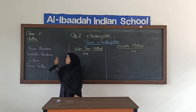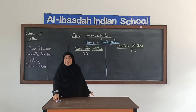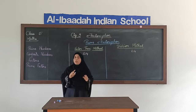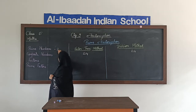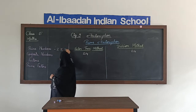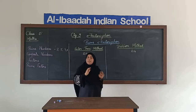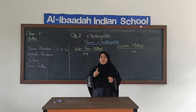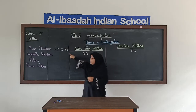First, prime numbers — what do we mean by prime numbers? The numbers that are divisible only by 1 and itself are called prime numbers. For example, numbers like 2, 5, 7, 11, and so on. Only 2 numbers will divide them — that is 1 and the number itself — they are called prime numbers.